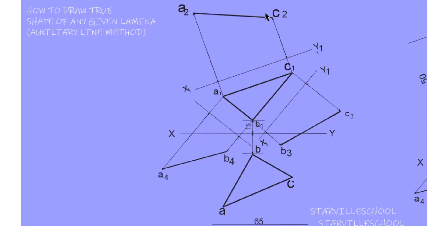We've gotten the true length of line A2C2, the true length of line B1C1 (B3C3), and the true length of line B1A1 which is A4B4. You must measure the lengths and write them out — for example, if the question asks for the true length of line AC.